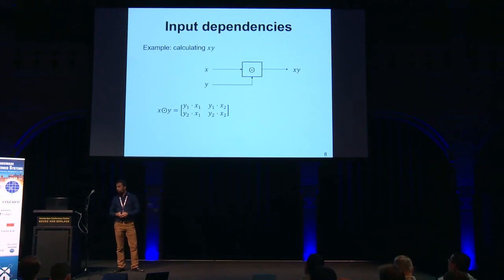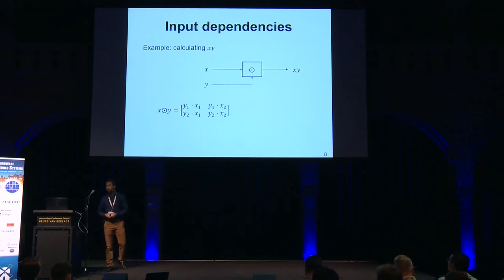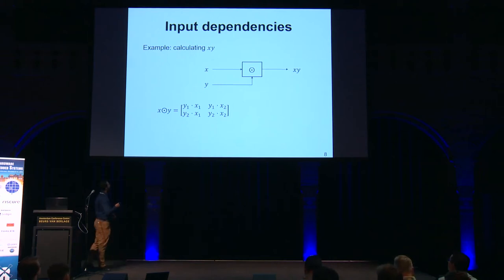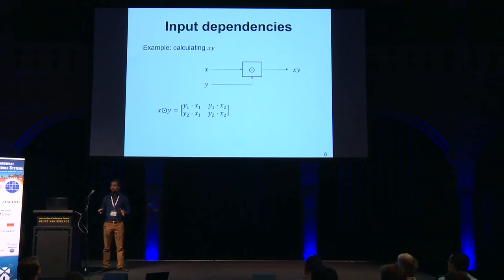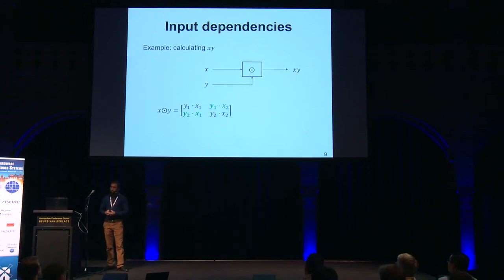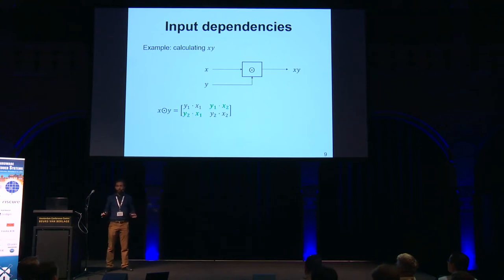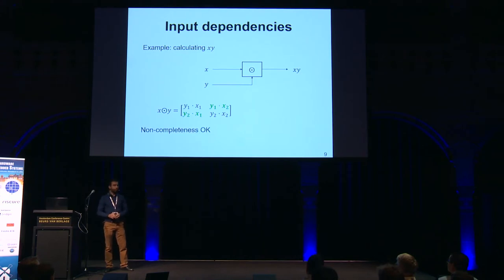To illustrate that, here is a small example: a DOM multiplier computing X times Y. We see the four cross-products. There are two dangerous cross-products that mix the two shares. Assuming our inputs are independent, we are safe, and non-completeness is fulfilled.